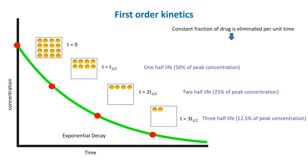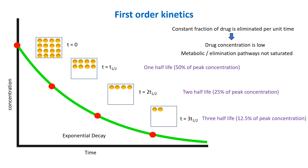But why does first-order elimination happen? First-order elimination occurs when the drug concentration is low and the metabolic enzymes or elimination pathways like the liver and kidneys are not fully saturated.